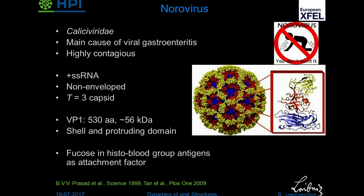The system we're working on a lot these days is noroviruses — you've all had it and it's not very pleasant. It's the main cause of viral gastroenteritis, and depending on the literature, about 1 to 20 particles is sufficient to cause infection. You find it in seafood — oysters are a very popular source. It's single-stranded RNA and non-enveloped, which means the capsid protein forming this T3 capsid has to carry out all functions, from cell attachment to uncoating and protection of the genome and so on.